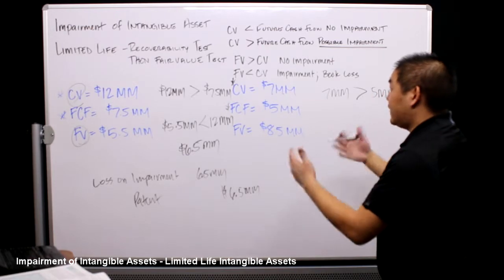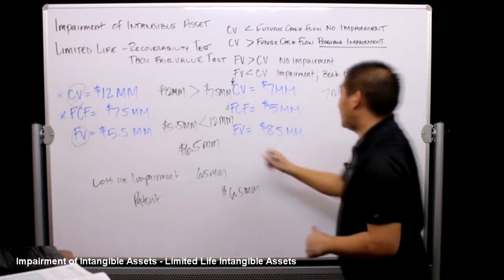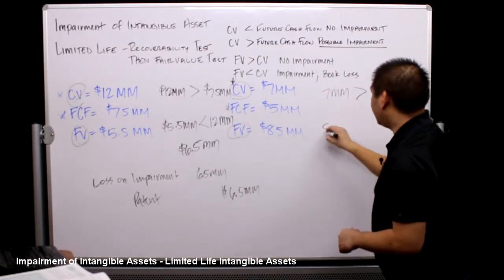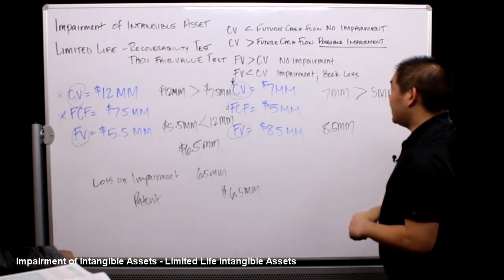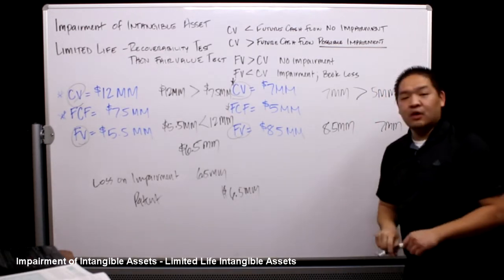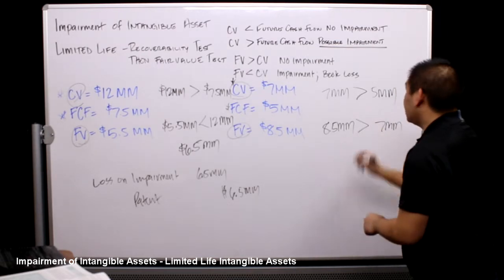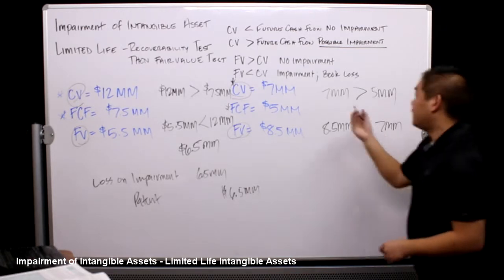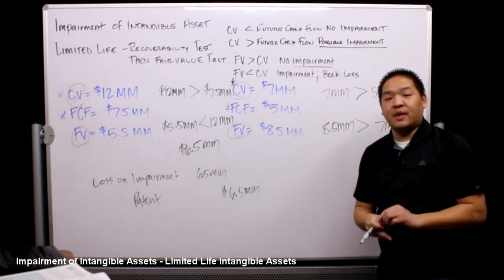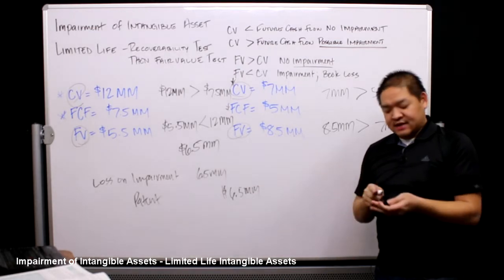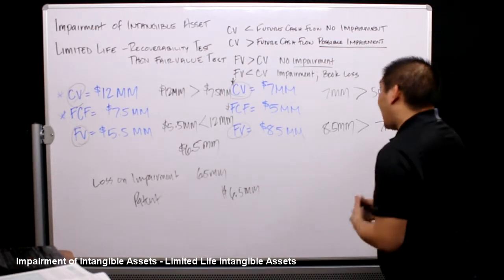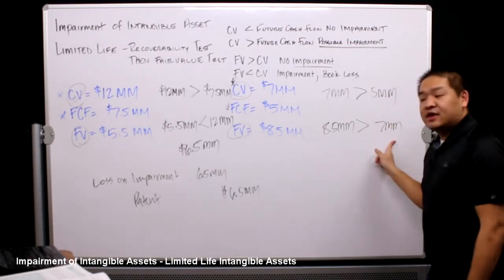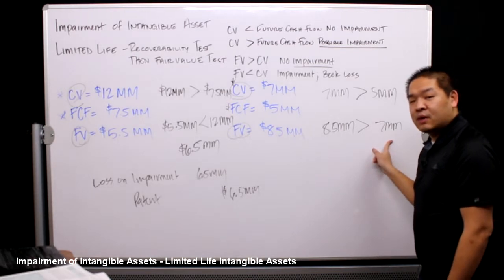Now for the fair value test: we take the fair value and compare it to the carrying value. The fair value is eight point five million and the carrying value is seven million. Eight point five is bigger than seven, so the fair value is greater than the carrying value — therefore in this example there is no impairment. We could sell it for eight point five million, it's on the books at seven, and we'd show a profit of one point five million.